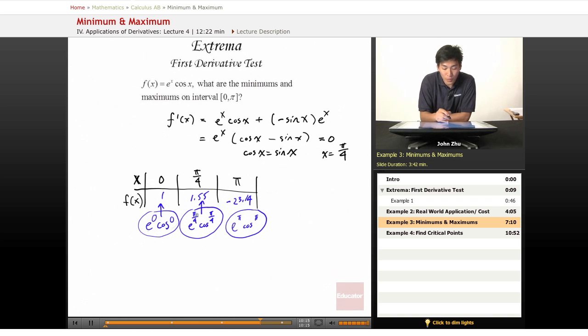So the max value is here at pi over 4, which is 1.55, and the minimum value is here at pi, which is negative 23.14.